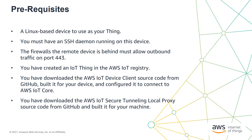Your firewall must allow the device to have outbound traffic on port 443. You need to have created a corresponding IoT thing in AWS IoT Registry and saved the keys and the certificates. To use Secure Tunnelling, your device needs to have AWS IoT Secure Tunnelling Local Proxy. For this demo, I'll be using AWS IoT Device Client, an IoT reference implementation that includes support for Secure Tunnelling.